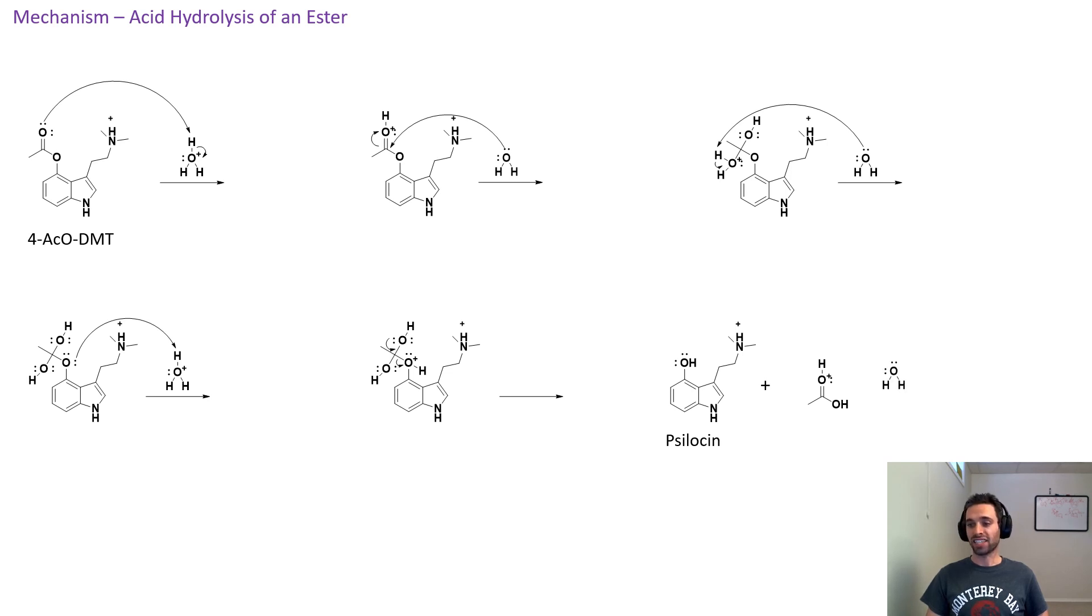In order for this ethanoic acid to be neutralized, a water molecule will attack the hydrogen, deprotonating it, forcing the electrons onto the oxygen, making it a neutral molecule and giving us the ethanoic acid. Basically, this reaction is how 4-AcO-DMT can undergo conversion to psilocin inside your stomach.